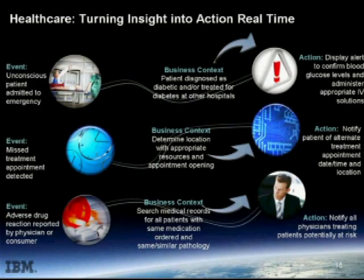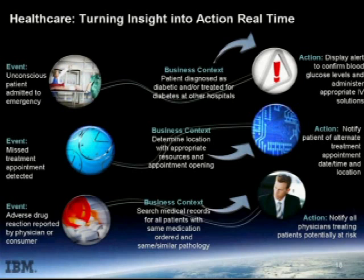Healthcare is another area where business event processing is being utilized. Take the example of a patient who comes into an emergency room unconscious — by virtue of their name, address, or social security number found on their person, you're able to find out that the patient was recently diagnosed with diabetes or treated at another hospital for diabetes. As a result of this correlated information, the action can be to ensure that blood glucose levels are at the proper range and that the proper IV solution is provided to the patient.